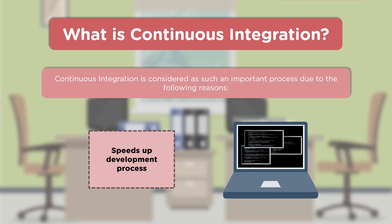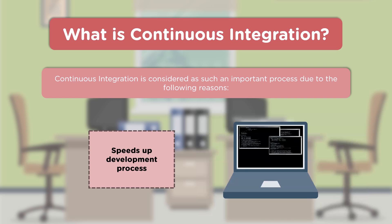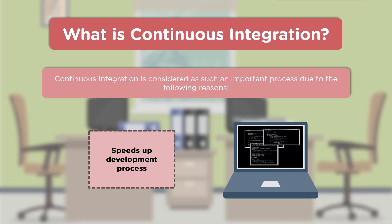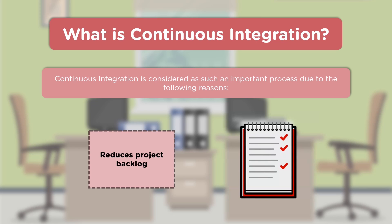Continuous integration also speeds up the development process. Developers can easily collaborate with each other, making source code integration smoother and enabling a more perfect automation process overall. Additionally, it reduces the product backlog — since changes are being pushed to the repository frequently, pending backlog items are addressed continuously rather than piling up.